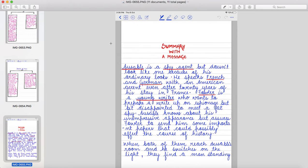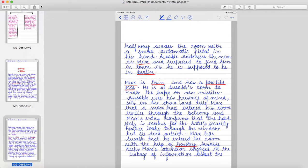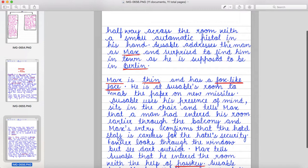Fowler is a young writer who wants to prepare a write-up on espionage but bit disappointed to meet a fat spy. Ausable knows about his unimpressive appearance but assures Fowler to send him some important papers that could possibly affect the course of history. When both of them reach Ausable's room and he switches on the light, they find a man standing halfway across the room with a small automatic pistol in his hand.